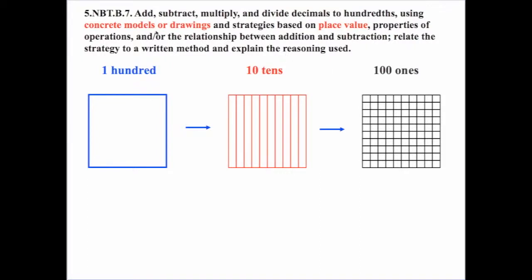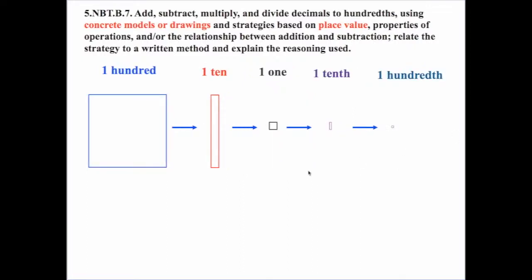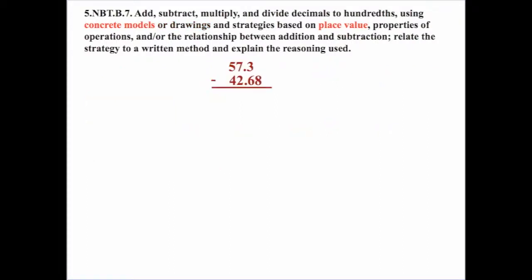Let's look at using concrete models or drawings with place value. Most teachers have manipulatives with hundreds, tens, and ones. We can adjust that thinking: one one equals ten tenths, which in turn equals one hundred hundredths. Physically there may be a problem because tenths and hundredths become very small, and most classrooms may not have those class sets of manipulatives. More likely, we'll use drawings or representations rather than physical models.